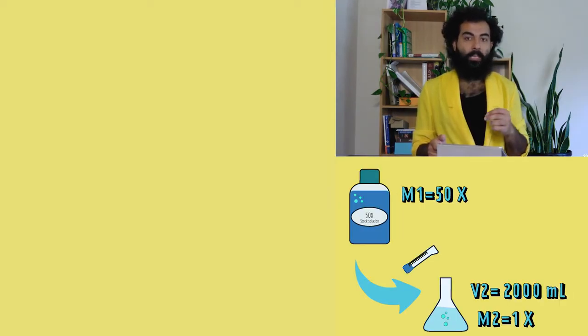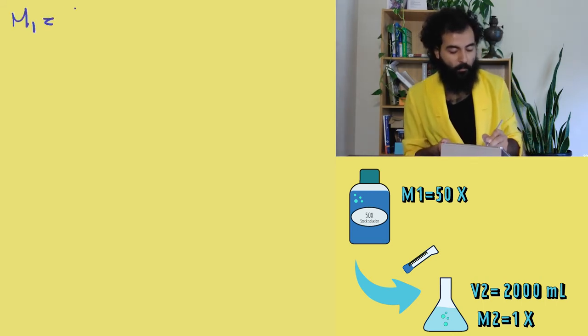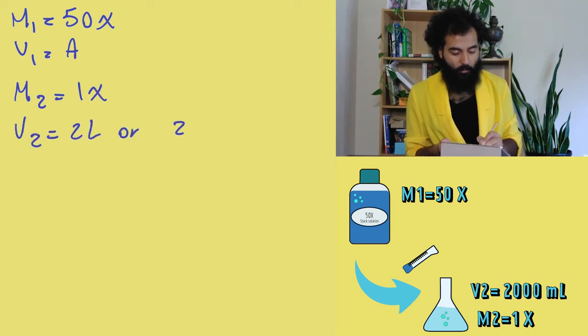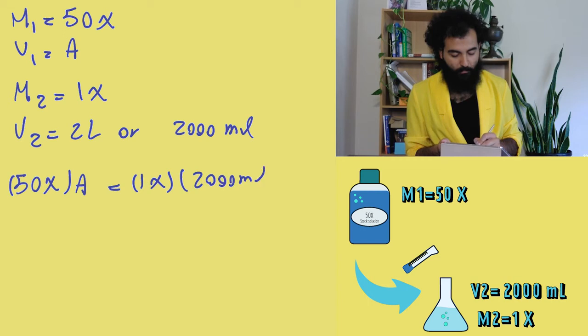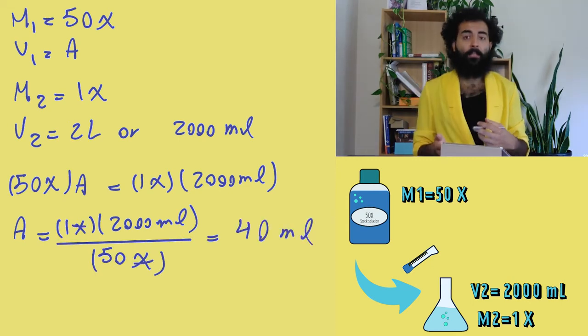Since the concentration is denoted by X, I will use A for the unknown variable. So, M1 equals 50x, V1 equals A, M2 equals 1x, and V2 equals 2 liters or 2000 mils. And 50x times A equals 1x times 2000 mils. And now I know I need 40 mils of my stock solution to create my working solution.